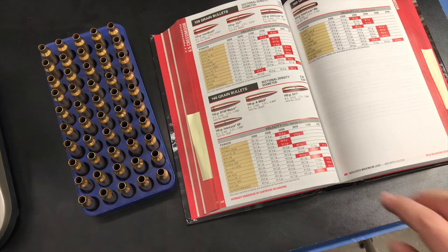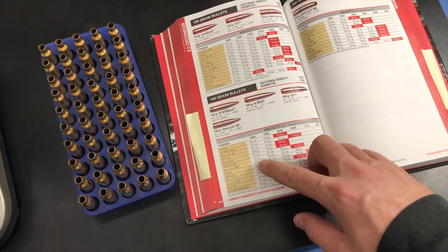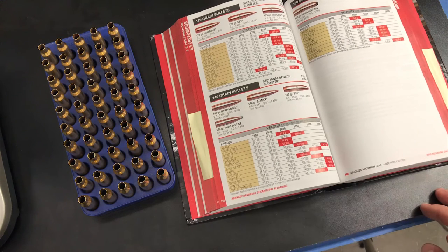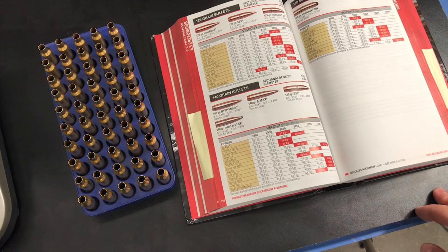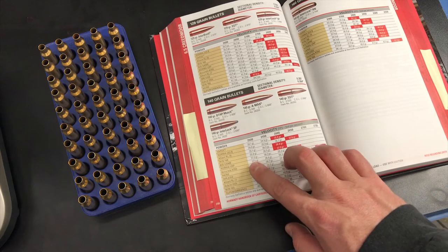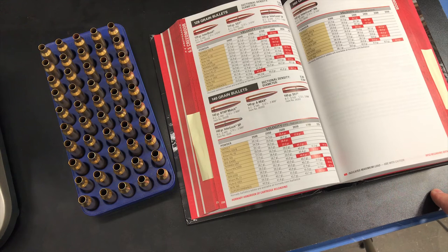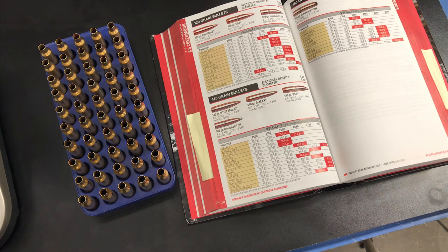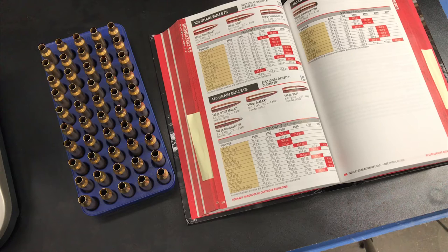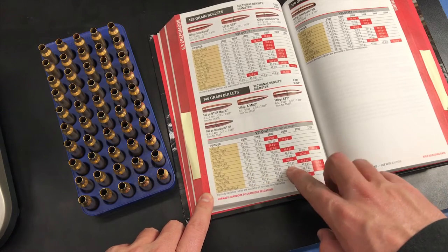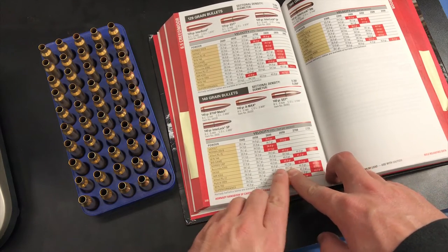We want to load a little bit hot for these cartridges so we could get our velocities up and get out there past a thousand yards. The difference between loading for extreme accuracy at a hundred yards, getting our groups as tight as possible, this is a different type of load that we're trying to develop here, specifically for long range.